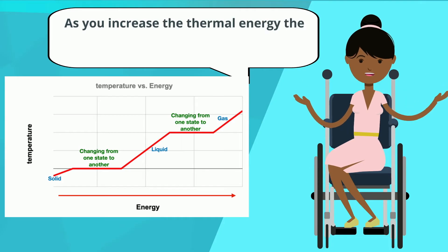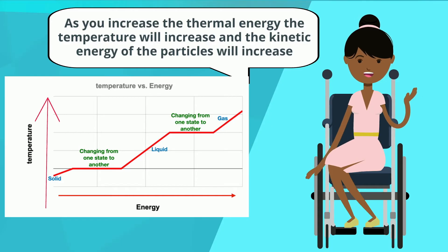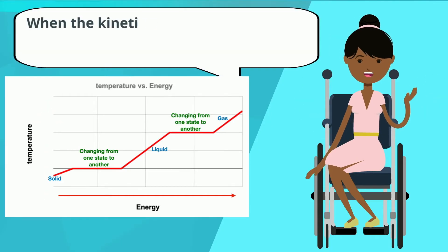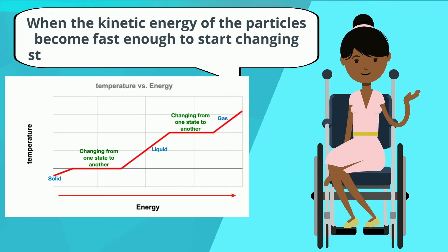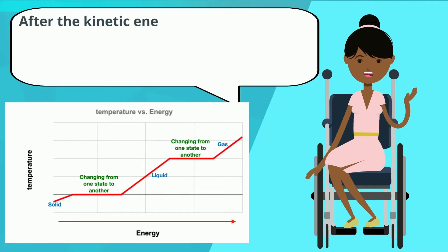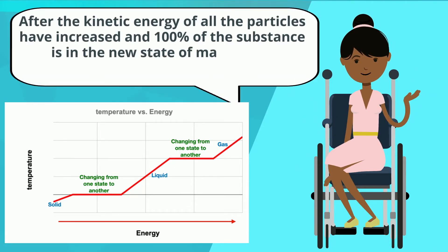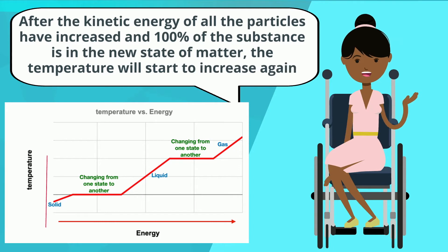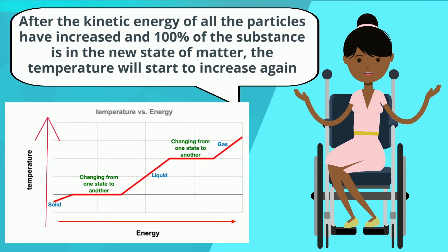As you increase the thermal energy, the temperature will increase and the kinetic energy of the particles will also increase. When the kinetic energy of the particles becomes fast enough to start changing state, the temperature will hold steady. After the kinetic energy of all the particles has increased and 100% of the substance is in the new state of matter, the temperature will start to increase again.